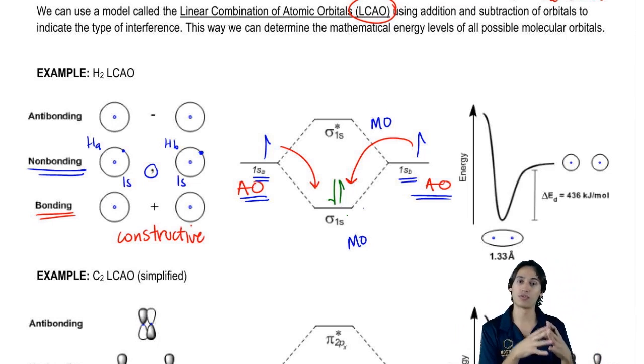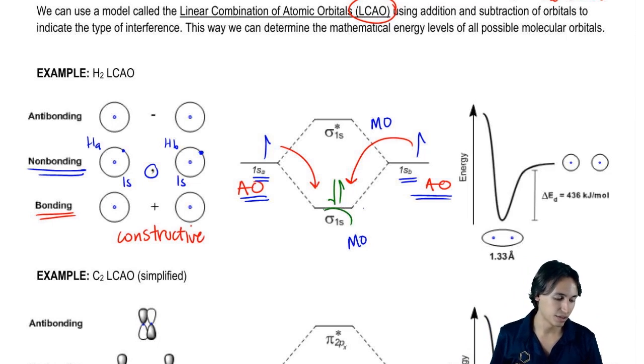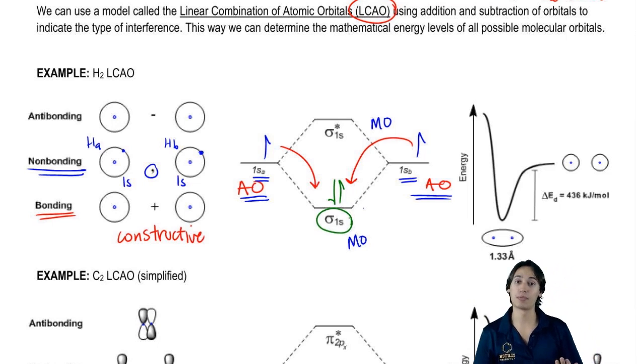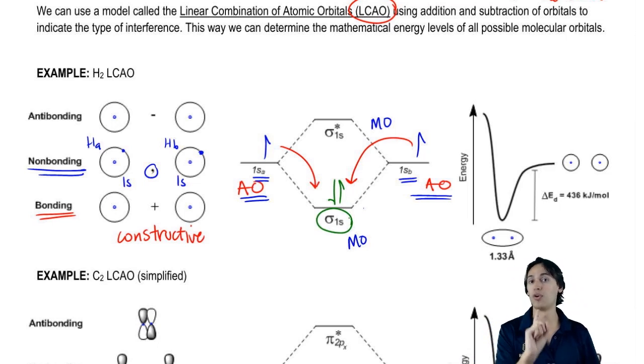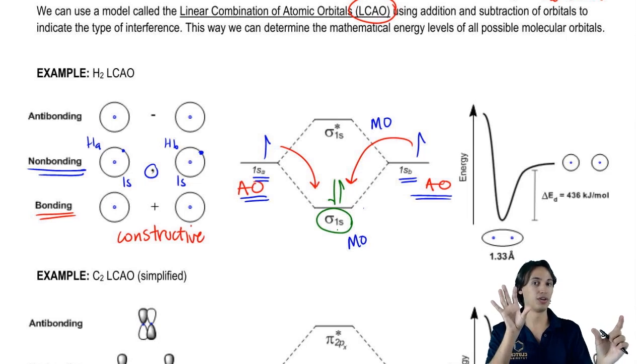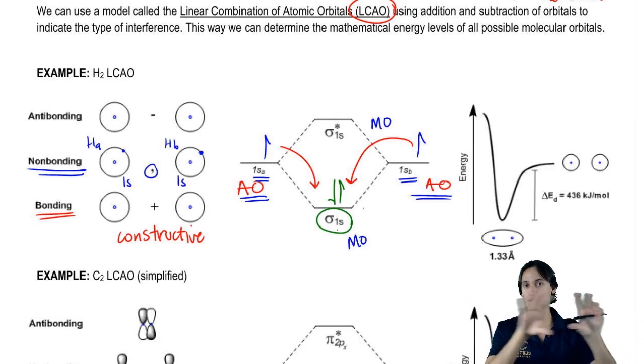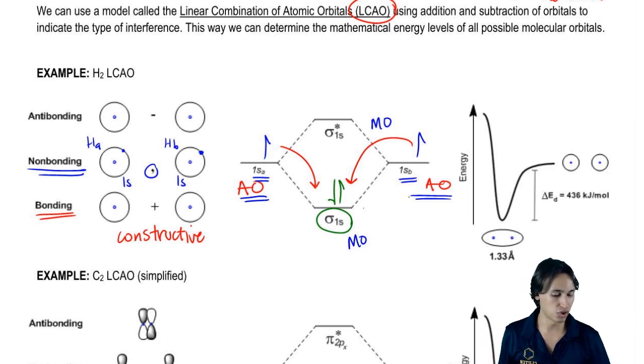When they constructively overlap like this, that's going to make what we call a sigma bond. Remember, a sigma bond is a region of one overlap and the reason it's called sigma 1s is because that's the sigma bond created by 1s orbitals, two 1s orbitals. So when they constructively interfere, you're going to fill what's called the bonding orbital, which is this one right here.